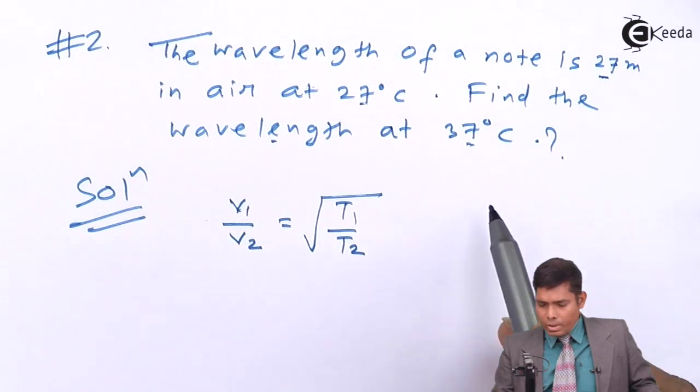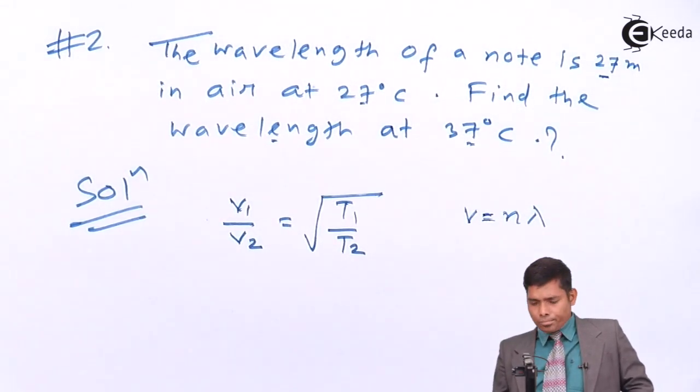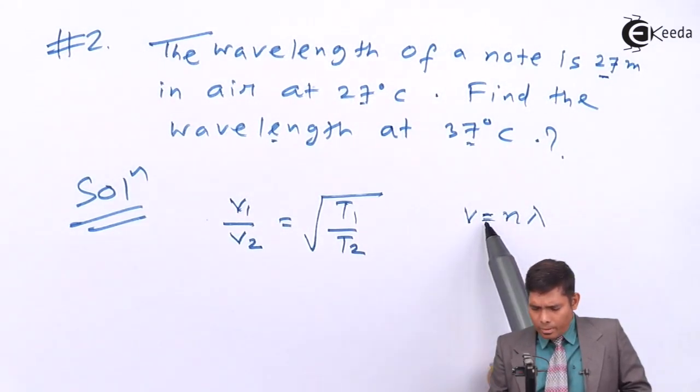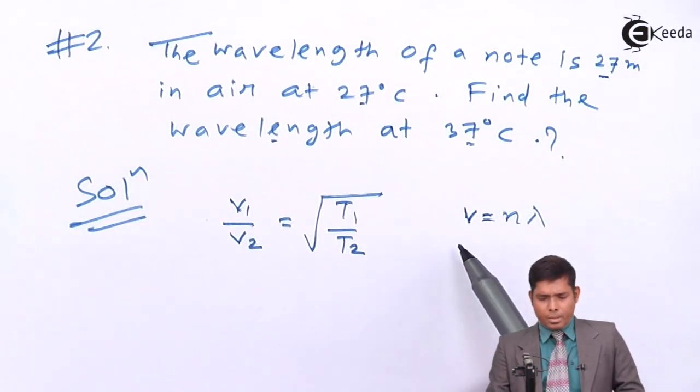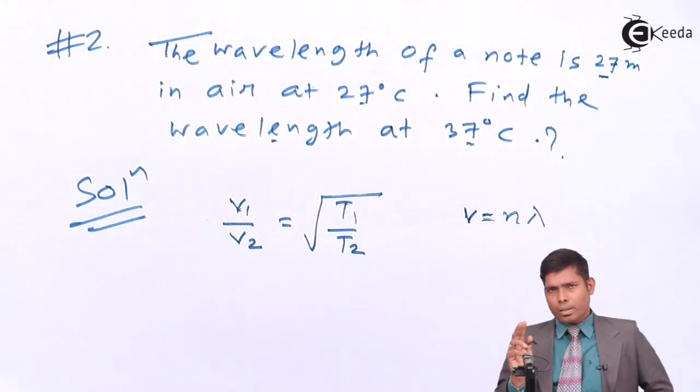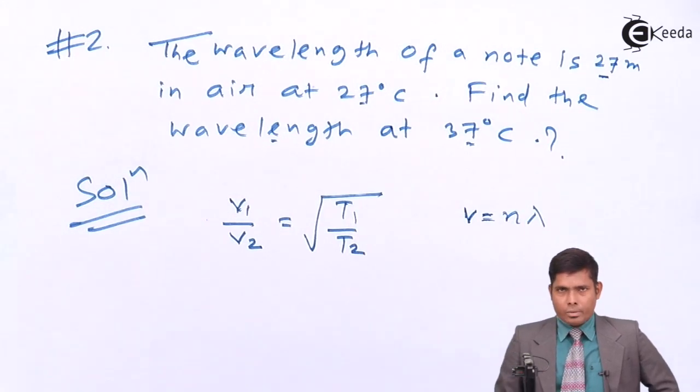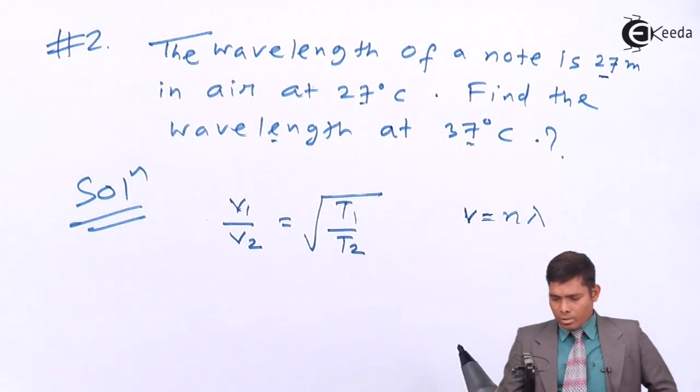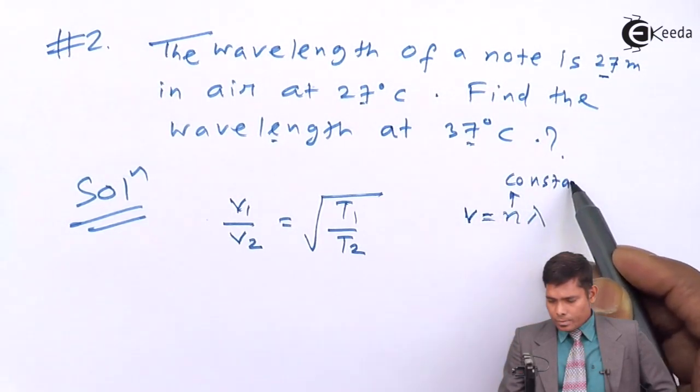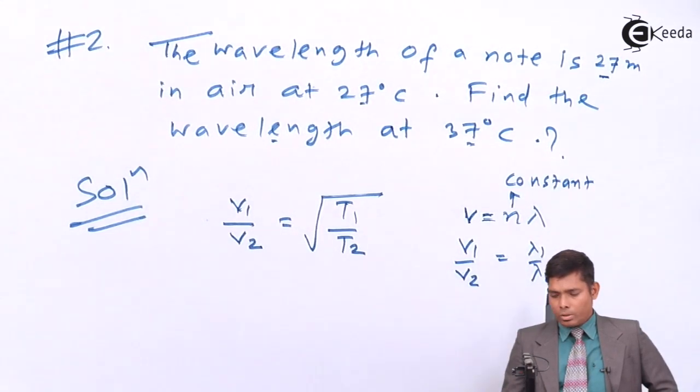Now, velocity is frequency times wavelength. So, V equals to frequency times wavelength. Now, we have two situations. Keeping frequency constant, because when temperature is changing, frequency will not change, because frequency depends on the source of the wave. So, the velocity and wavelength will change. So, what I have is V is proportional to lambda. So, V1 by V2 is lambda 1 by lambda 2. This I substitute here.